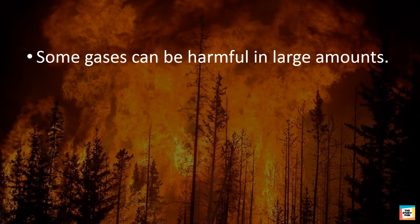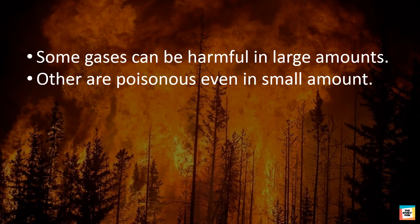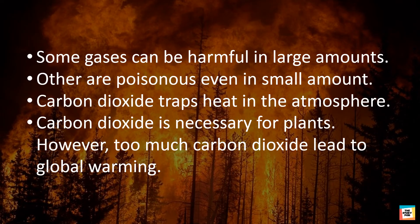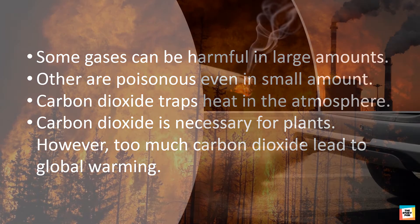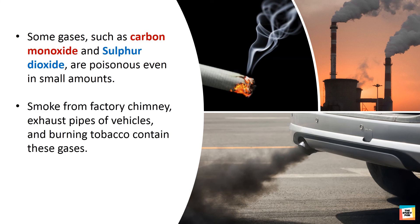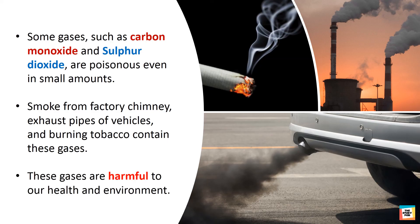Some gases can be harmful in large amounts, while others are poisonous even in small amounts. Carbon dioxide traps heat in the atmosphere. Although carbon dioxide is necessary for plants, too much of it in the air leads to global warming, which is very harmful for us. Gases such as carbon monoxide and sulphur dioxide are poisonous even in small amounts. Smoke from factory chimneys, exhaust pipes of vehicles, and burning tobacco contain these harmful gases, which are harmful to our health and environment.